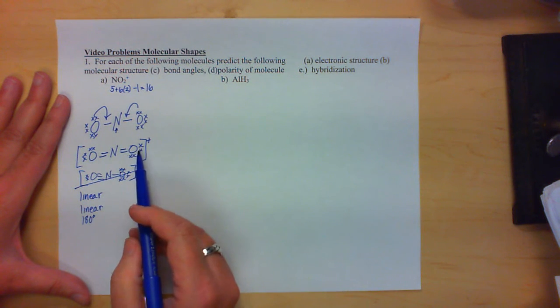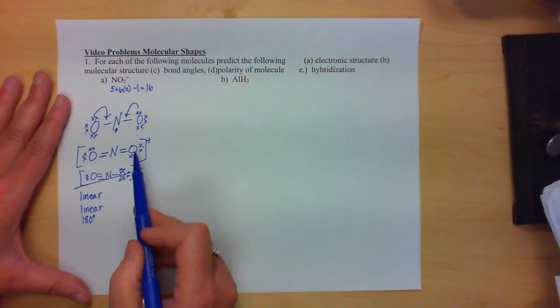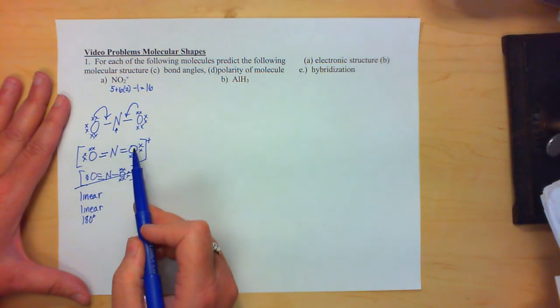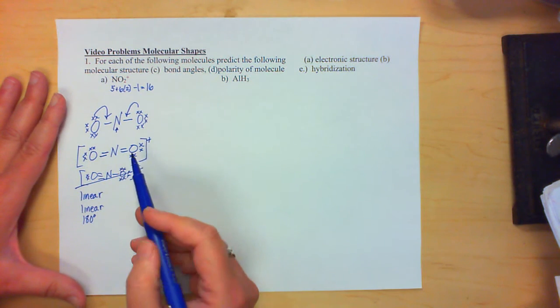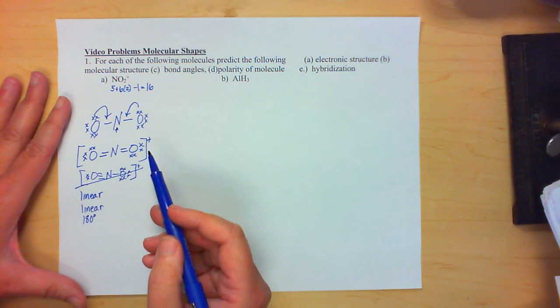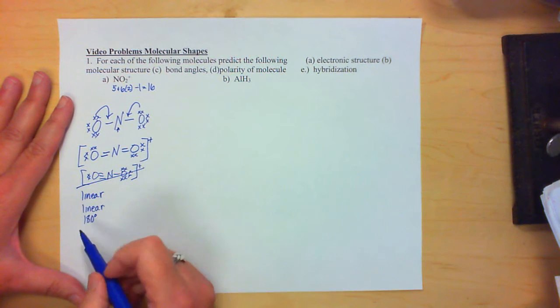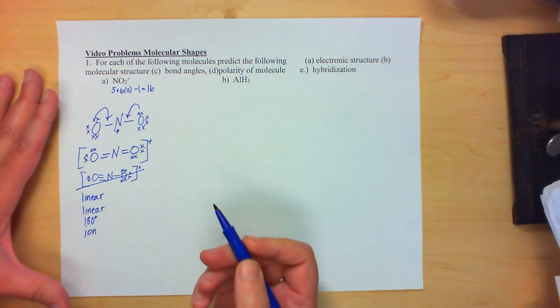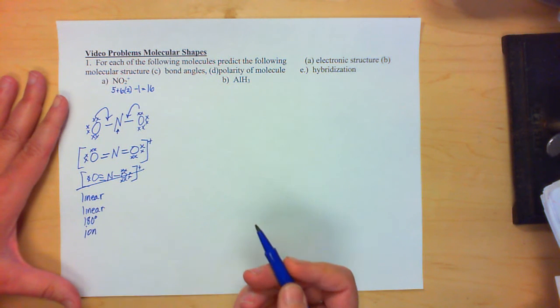And then we're going to ask for the polarity. Well, normally, if this was a neutral molecule, then we would have two double bonds that are identical, so it would be balanced. Even though the bonds are polar, it would be a symmetrical molecule. We don't have that. This actually is an ion, so when it asks for polarity, if it's an ion, it's an ion.